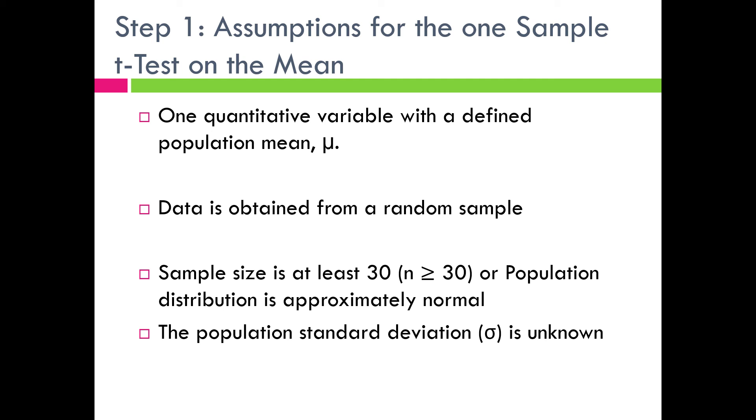And then the last thing, and this is specific to the one sample t-test, is in this case, the population standard deviation would be unknown. So if we meet these conditions right here, this is saying yeah, we can do a one sample hypothesis test on the mean and we can use the t-distribution.